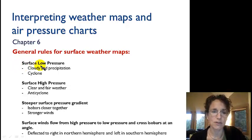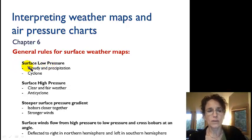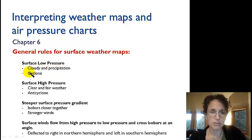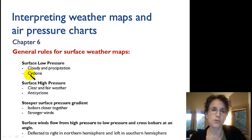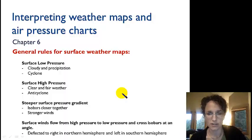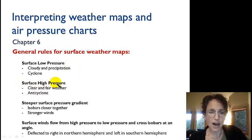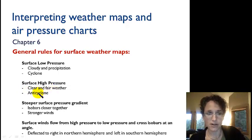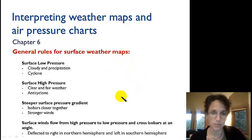The first is that if we have a surface low pressure, we can interpret that the weather is probably going to be cloudy and there's going to be precipitation. Remember that cyclonic flow, which in the northern hemisphere is in the counterclockwise direction. If we have a surface high pressure area, then we're going to have more clear and fair weather, and that is anti-cyclonic flow in the clockwise direction in the northern hemisphere.